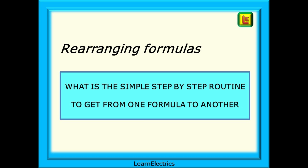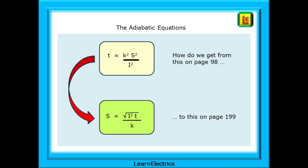What is the simple step-by-step routine to get from one formula to another, especially those formulas that may be asked in assessments and exams? The often quoted formula is the adiabatic equation, used for selecting earthing conductor sizes. There are two versions of the adiabatic equation shown in the wiring regulations book, and we've been asked frequently how do we get from the formula on page 98 to the formula on page 199, and what are the steps involved? Please keep it simple.